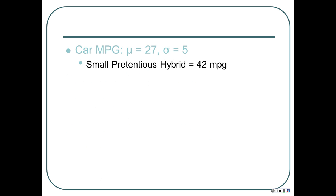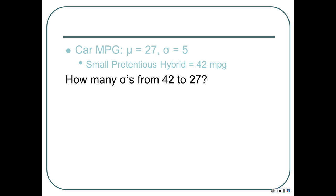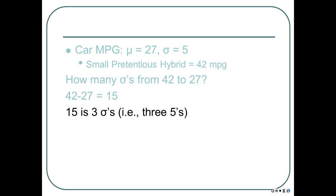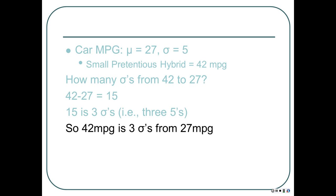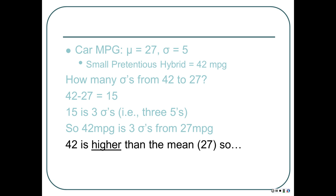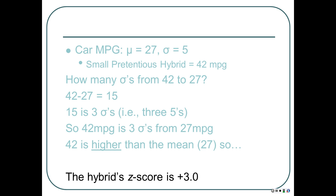A small hybrid gets 42 MPG. How many standard deviations from 27 to 42? The difference is 15 — that's three 5s, so three standard deviations. Since 42 is higher than 27, the hybrid's z-score is positive 3.0.